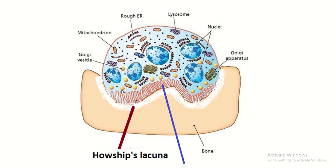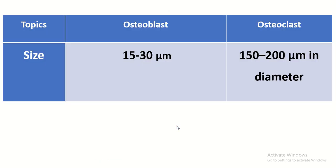The osteoclast shows multiple nuclei with prominent nucleolus, rough endoplasmic reticulum, a huge number of lysosomes, the ruffle border of irregular microvilli, and the Howship's lacuna. Comparing size, the osteoclast is much bigger than the osteoblast.